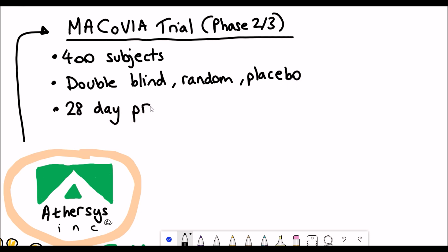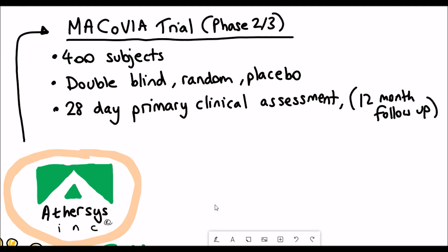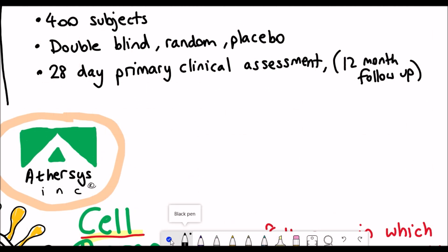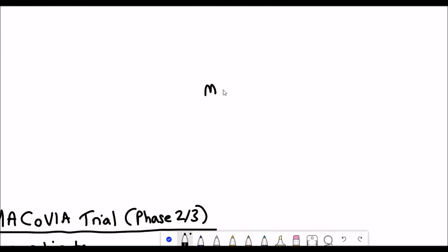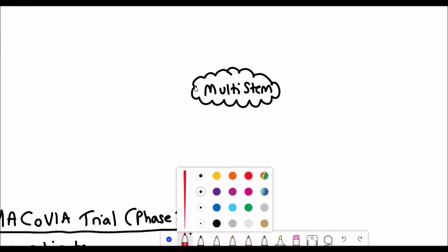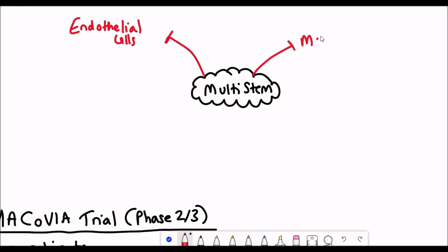Eric Jenkins spoke on behalf of Athersys and went into detail about their MACOVIA trial, which stands for Multistem Administration for COVID-19 Induced ARDS. This is a phase 2-3 trial with FDA approval to enroll 400 subjects in a double-blind randomized placebo trial. After 28 days of giving Multistem, they want to do a primary clinical assessment and then a 12-month follow-up to assess quality of life and health. I didn't talk about how these Multistem cells actually achieve this and alleviate symptoms and increase patient recovery.